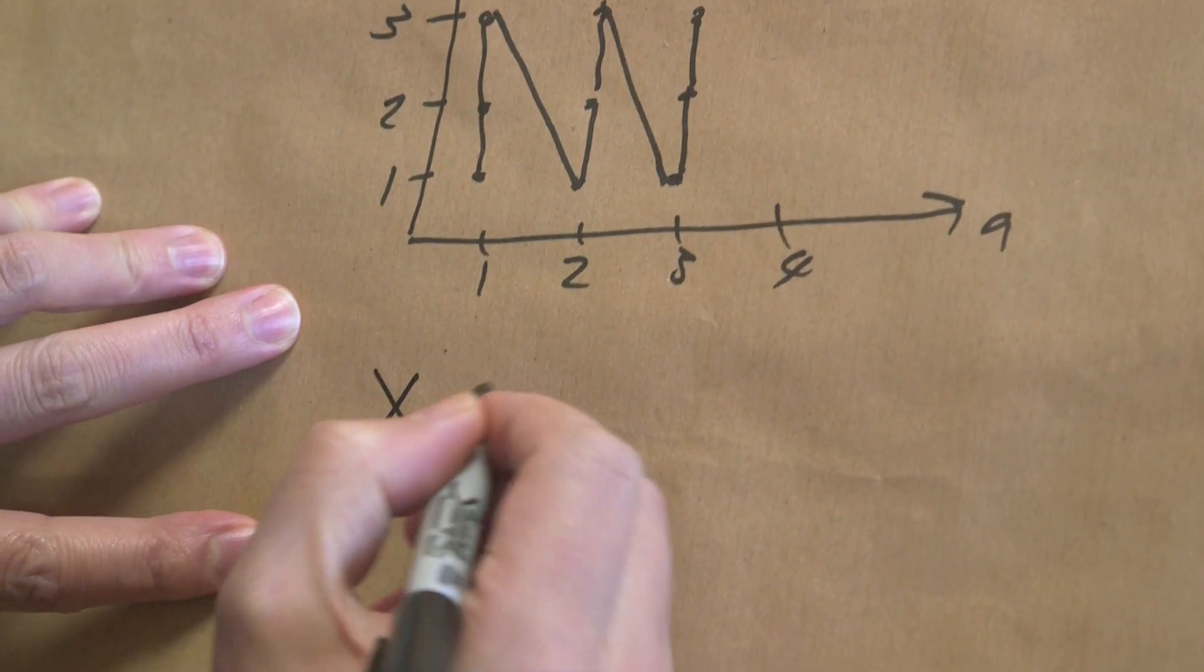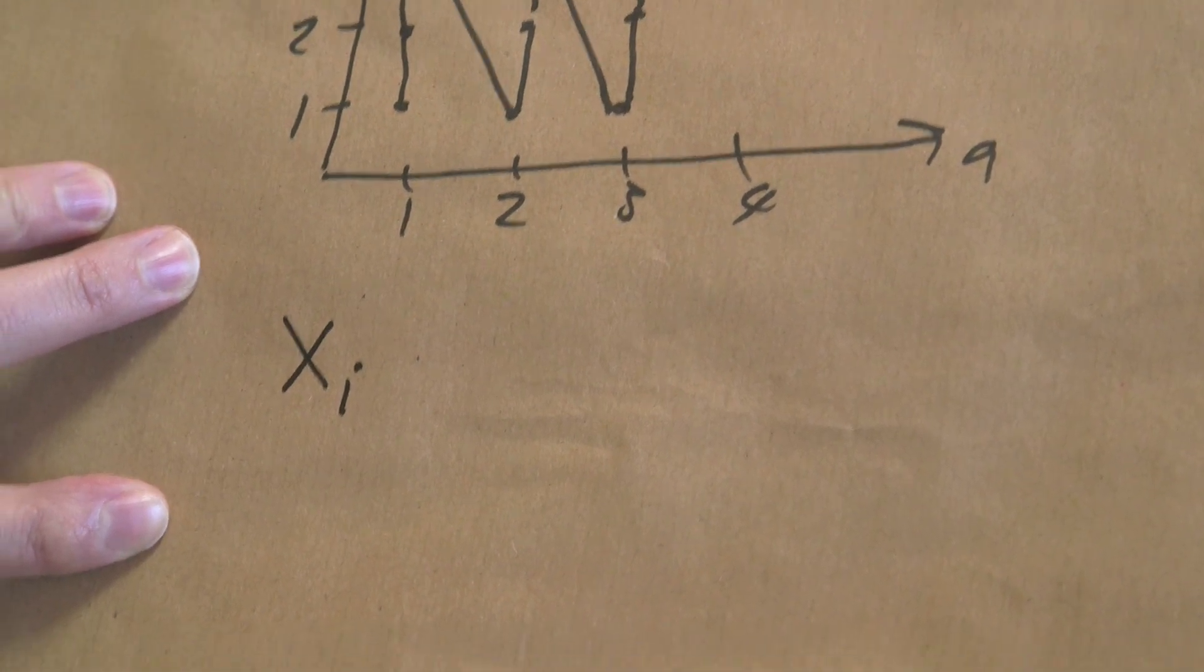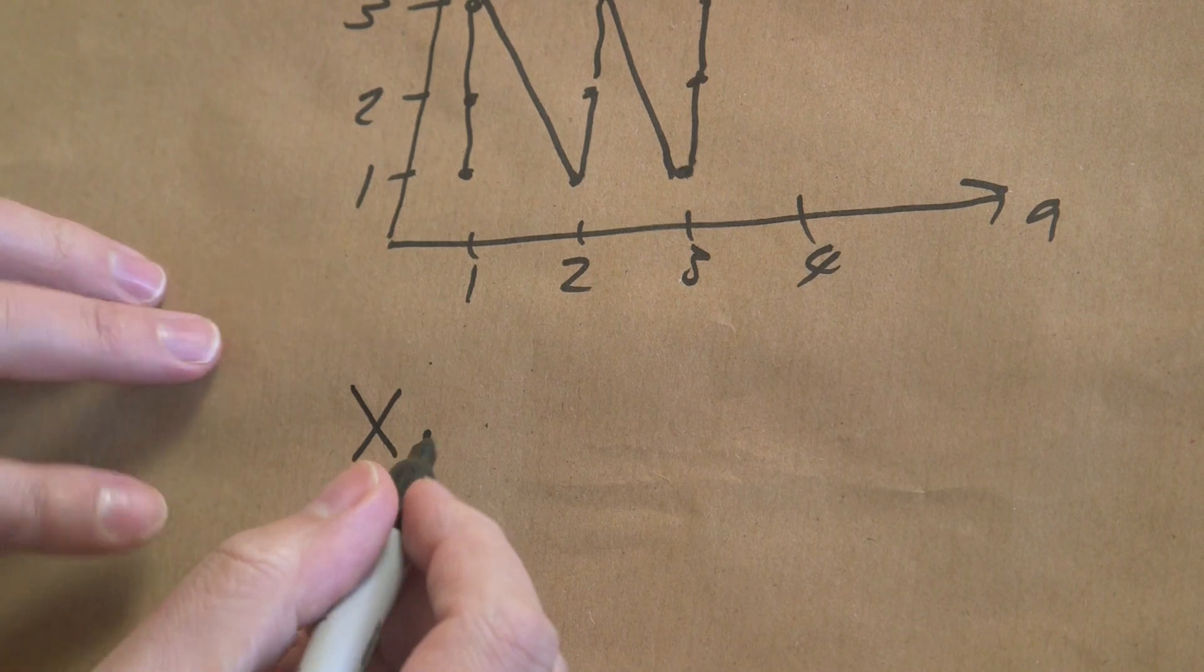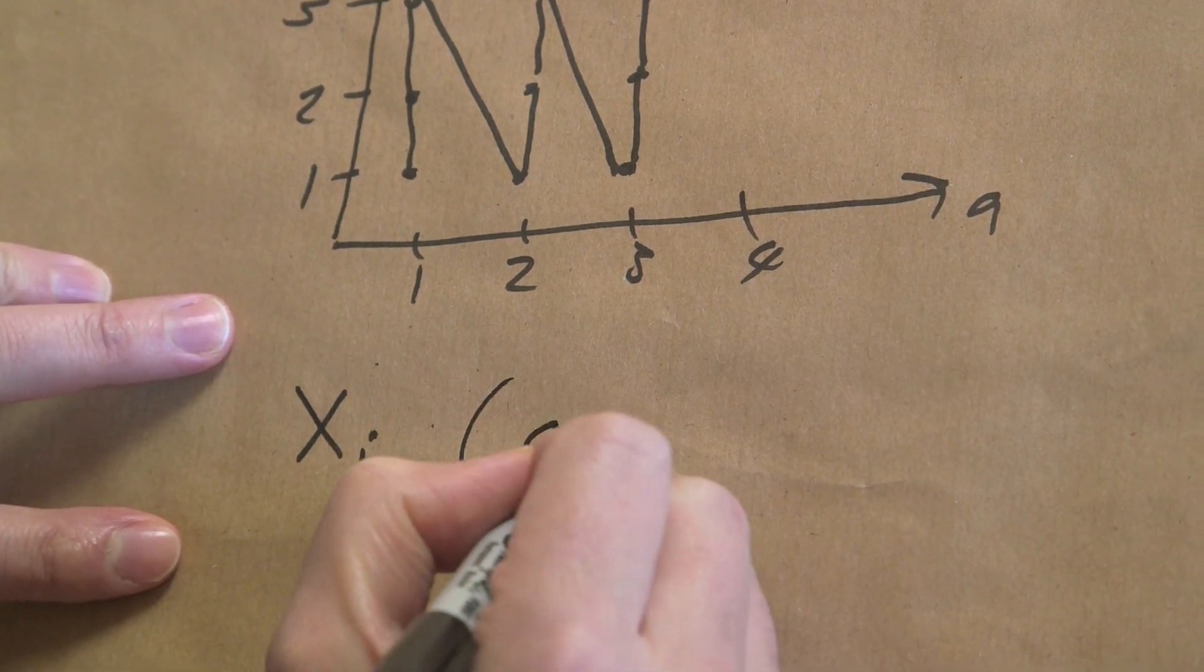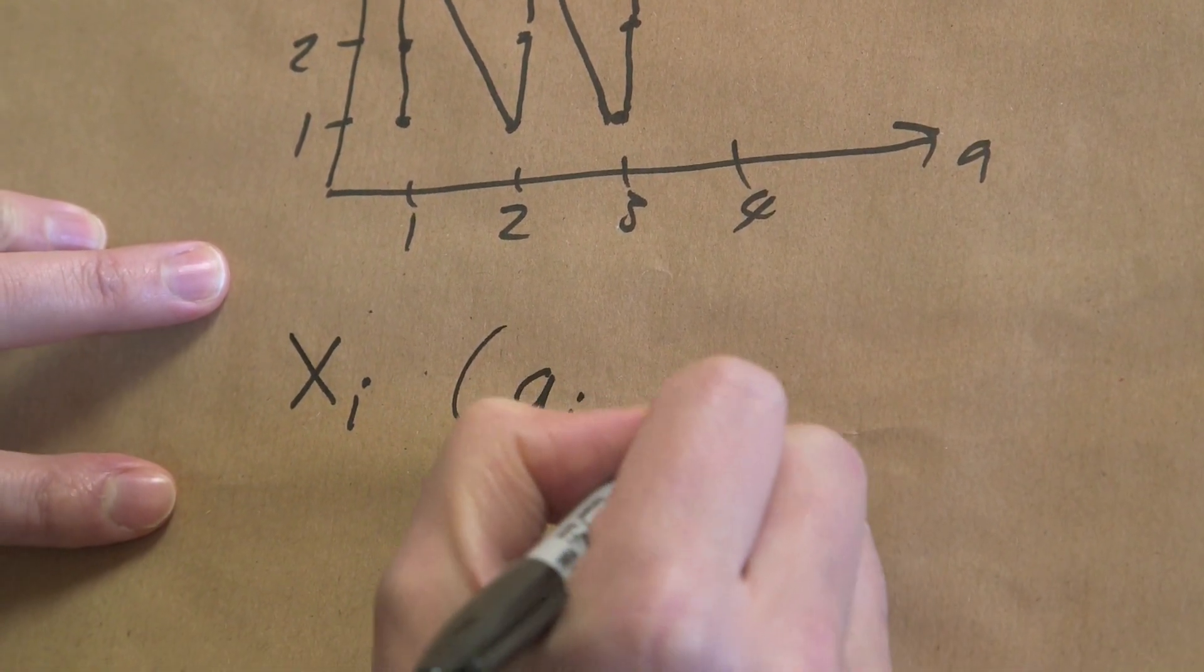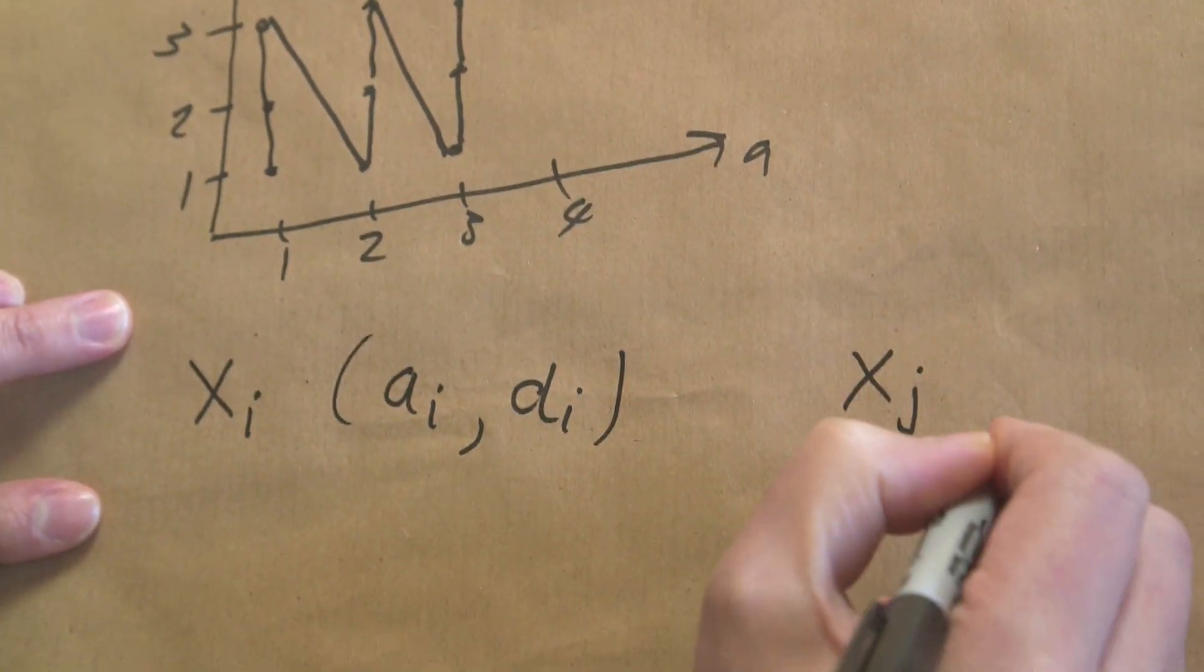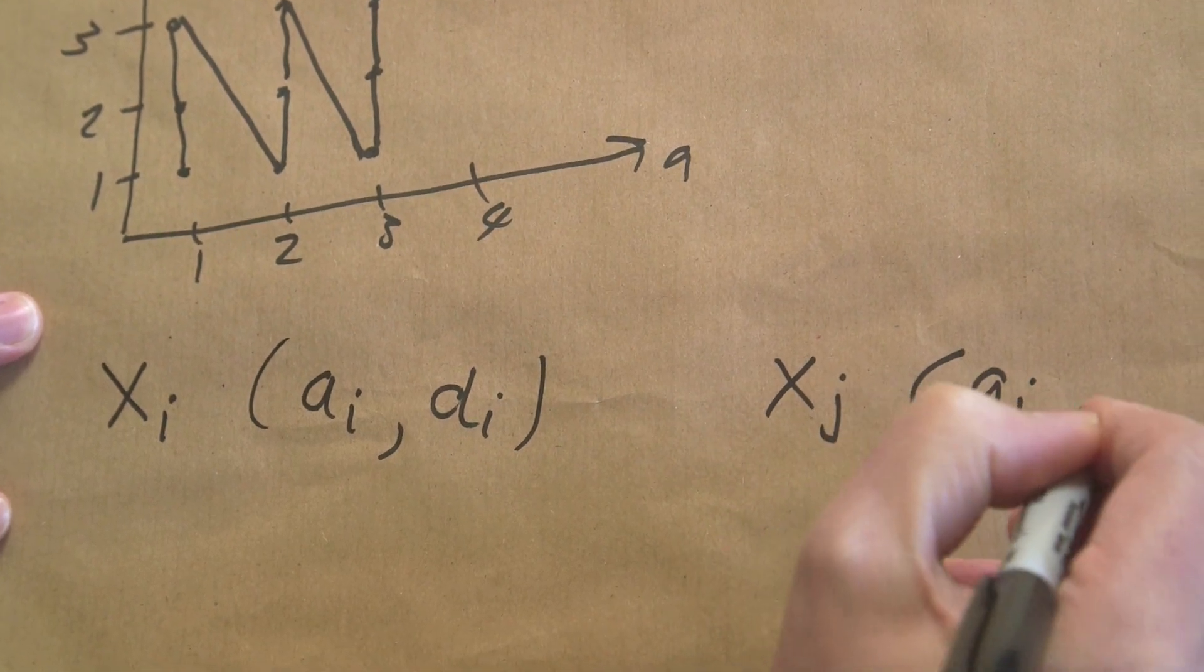I'm going to see if I can fit it on this paper. We have to introduce a general position because we're going to do this for generality. So we're going to have xi could be any of these, right? So that has some pair, so it's ai, di. And then we've got another one xj, which is aj and dj for descending.